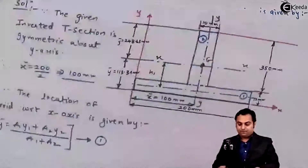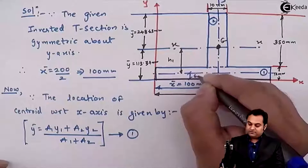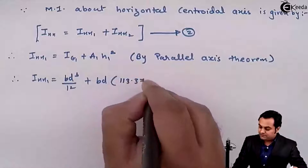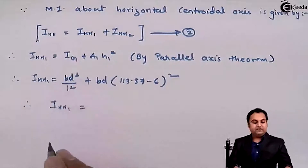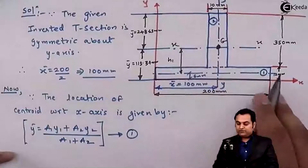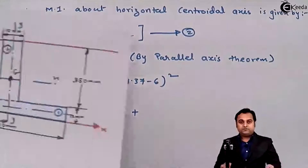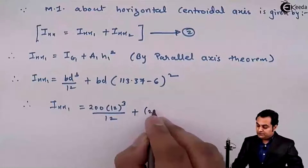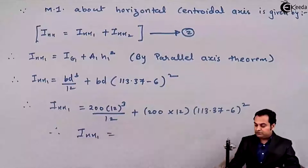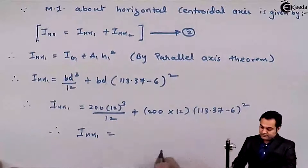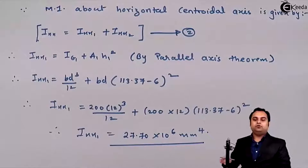Therefore, IXX1 = (BD³/12) + B·D·h₁², where B = 200, D = 12, and h₁ = 113.37 − 6 mm. So IXX1 = (200 × 12³)/12 + 200 × 12 × (113.37 − 6)². On calculation, IXX1 = 27.70 × 10⁶ mm⁴. This is the moment of inertia for the first rectangle about the horizontal centroidal axis.